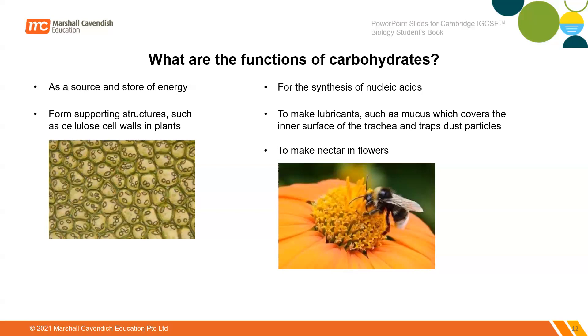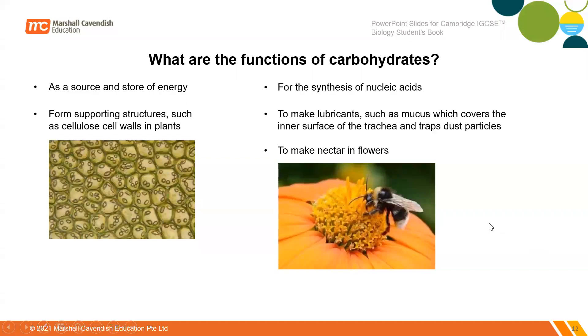Carbohydrates are also used to make lubricants such as mucus, which covers the inner surface of the trachea and bronchi to trap dust particles and keep the airways clean. Finally, carbohydrates are used to make nectar in flowers, which attracts insects for the pollination process — insects transfer pollen grains to the stigma while collecting nectar as food.